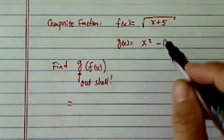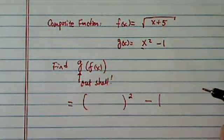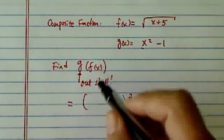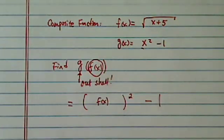So function g looks like whatever you give me, I'm going to square and then take 1 away. That's what the outer shell is. And then what do I give you? I give you f of x. Let's just put f of x in there.